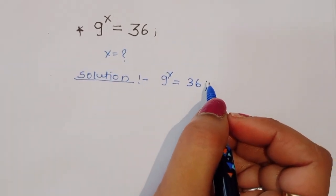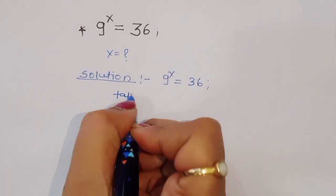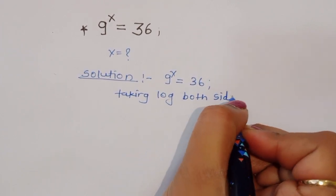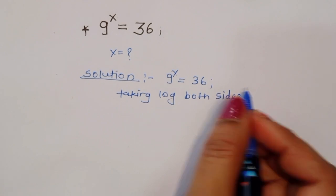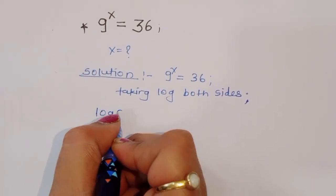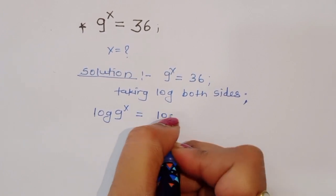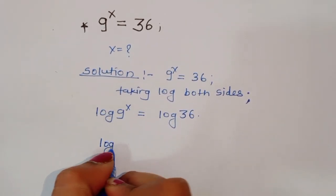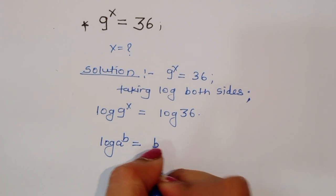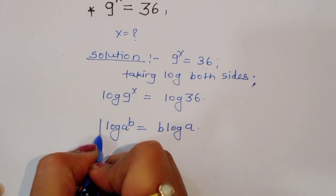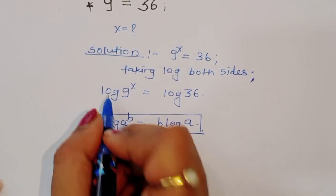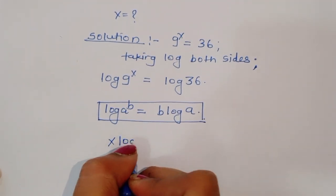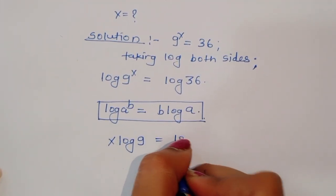First, what is given: 9 power x is equal to 36. Now we can do one thing — taking log both sides. So, taking log both sides, we will get log of 9 power x is equal to log of 36. Now we know the formula: log of a power b is equal to b log of a. Using this formula, we can write x log of 9 is equal to log of 36.